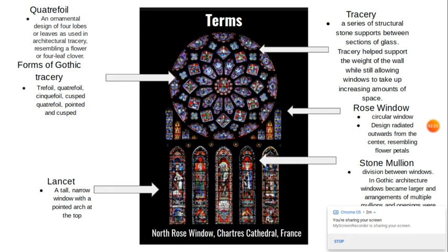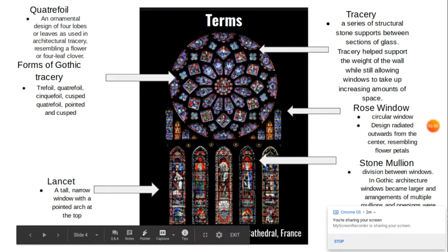This is a rose window at the top. It's circular and it radiates outwards, resembling flower petals. The windows at the bottom would be called lancet windows — they're tall, narrow windows with a pointed arch at the top. Dividing these is a stone mullion, which is a division between the windows that helps to support them. Tracery helped support the weight of the wall but still allowed windows to take up increasing amounts of space.